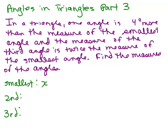Let's start with x. If that's the smallest one, then one angle is four degrees more than the measure of the smallest. If the smallest is x and it's four degrees more, this would be x plus four. I'm going to leave off the degree symbol, but at the end of the problem when we write our answer, we have to remember to write it in degrees.